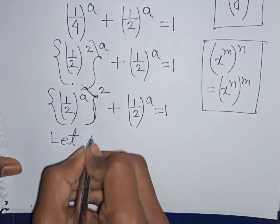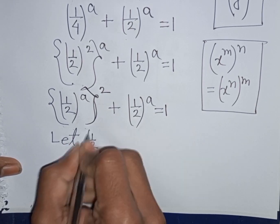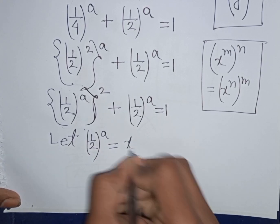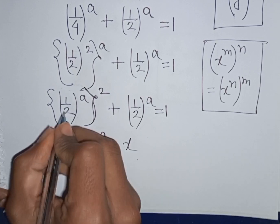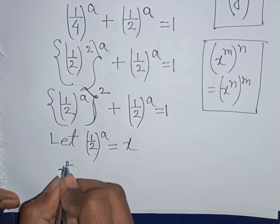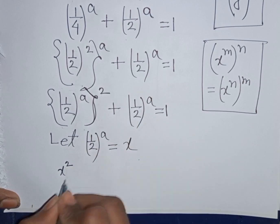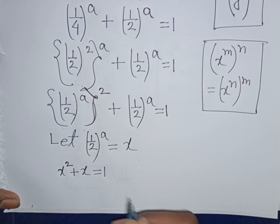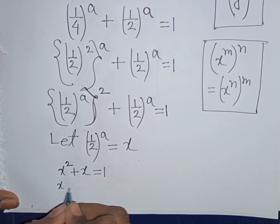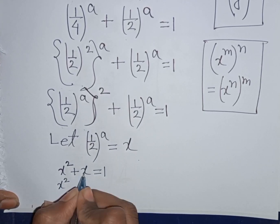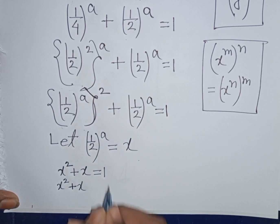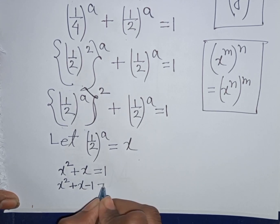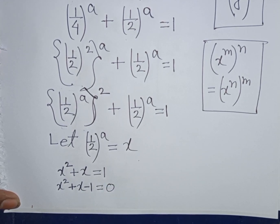Let (1/2) bracket power A equal x. So our equation will be x squared plus x is equal to 1. We can write here x squared plus x, then taking 1 to the left side, this will be minus 1, so x squared plus x minus 1 is equal to 0.